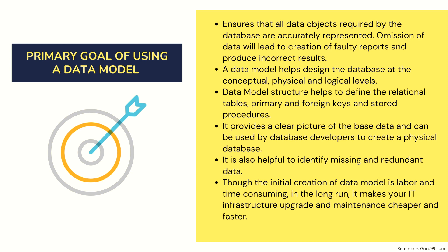You should also remember that omission of data will lead to creation of faulty reports and produce incorrect results. That means if your relationships are not correct, if your data modeling is not correct, then you won't get accurate results. A data model helps design the database at the conceptual, physical, and logical levels. Data model structure helps to define the relational tables, primary and foreign keys, and stored procedures. Whenever you connect two different tables, there should be a relationship between them, which in data modeling we generally do using primary and foreign key relationships.